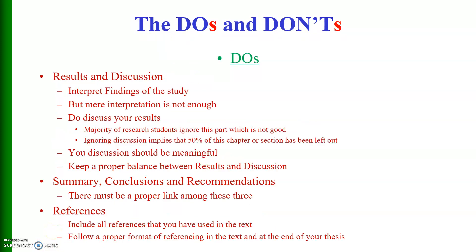Then we give results and discussion in the fourth chapter. Results mean we interpret the findings of the study. Sometimes the researcher only interprets the results and does not include discussion — that is not enough. You must also include discussion. The majority of students ignore this part, which means 50% of the chapter has been left out. Never make this mistake — always include relevant and meaningful discussion, with a proper balance between results and discussion.